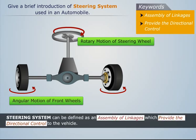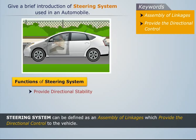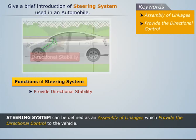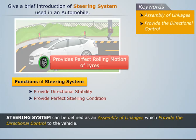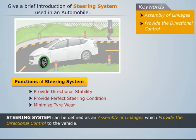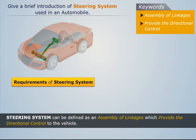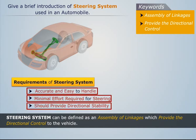The steering system can be defined as an assembly of linkages which provides directional control to the vehicle. Other than steering the vehicle, the steering system also performs the following functions: it provides directional stability when going straight ahead, it is responsible for providing perfect rolling motion of the road wheels during steering, and it is responsible for minimizing tire wear. To cater to these functions, a steering system must fulfill the following requirements.